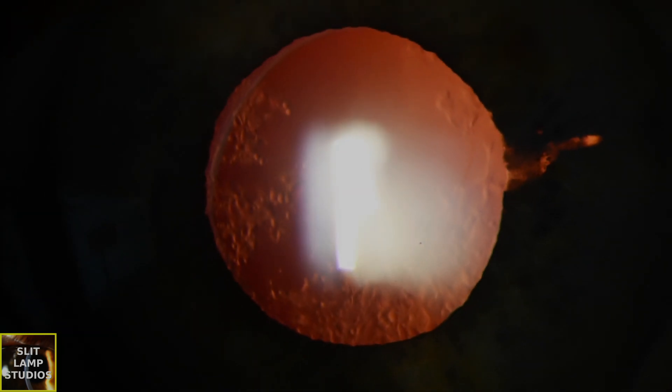So the anterior chamber is clear. We can see that the anterior vitreous is also clear. There's no pigment or any cells. Let's have a look at the back of the eye.